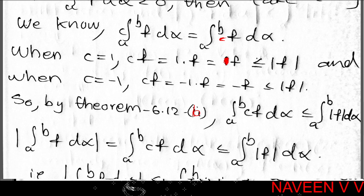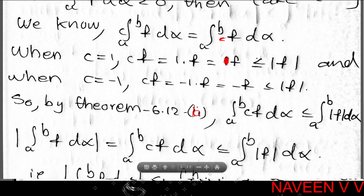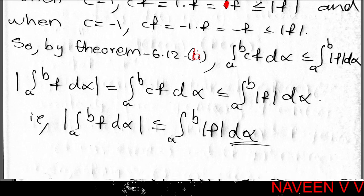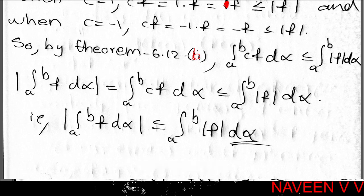Since c·f ≤ |f| on [a,b], we have ∫ₐᵇ c·f dα ≤ ∫ₐᵇ |f| dα. We choose c so that c·∫ₐᵇ f dα ≥ 0, and ∫ₐᵇ c·f dα = c·∫ₐᵇ f dα = |∫ₐᵇ f dα|. Therefore |∫ₐᵇ f dα| = ∫ₐᵇ c·f dα ≤ ∫ₐᵇ |f| dα. This completes the proof of Theorem 6.13.